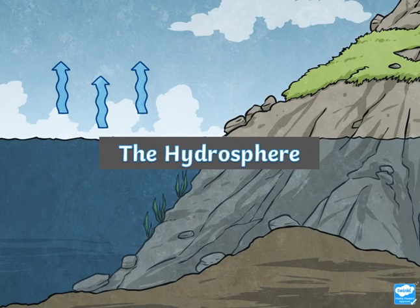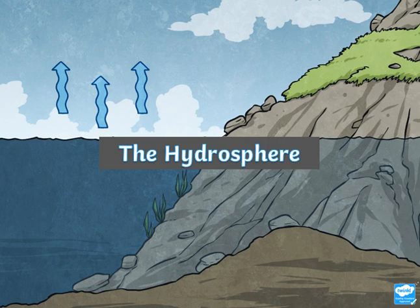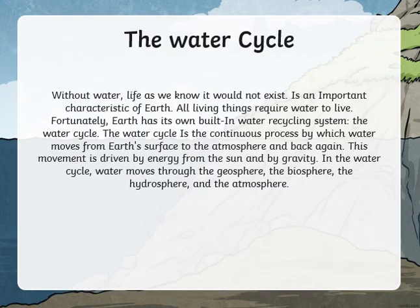Hello Grade 6, and welcome to this week's weekly breakdown. Last week we started with the lesson on the hydrosphere. As you all know, the hydrosphere is the system of Earth that includes all the bodies of water on Earth, and last week we started with the lesson and we talked about the first part, which is the water cycle.